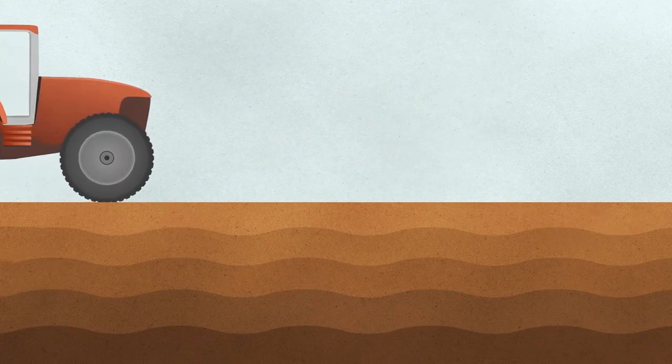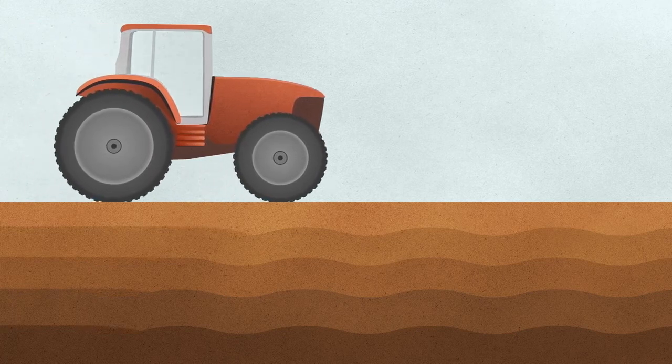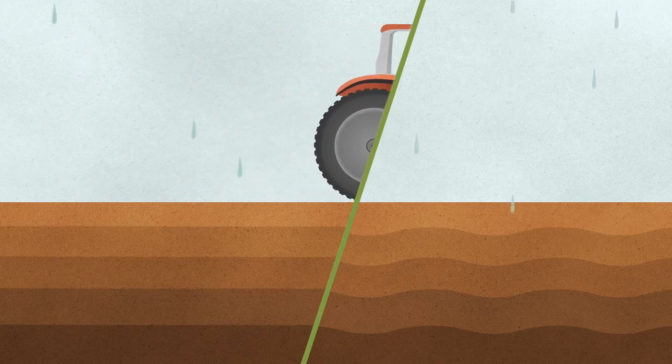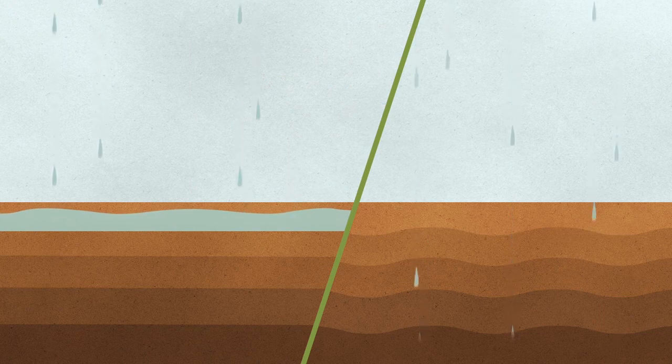By ploughing less frequently, it means the subsoil, the lower layer of soil, is no longer compacted by the weight of farm machinery, improving water drainage.